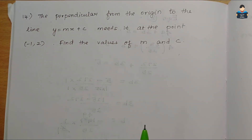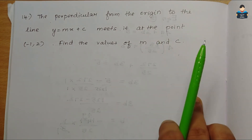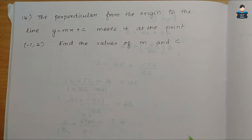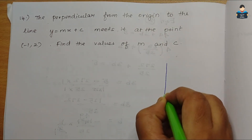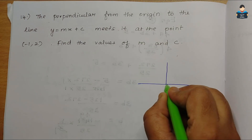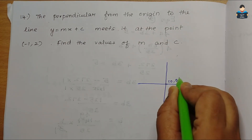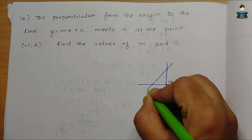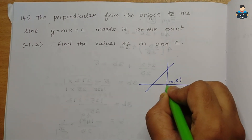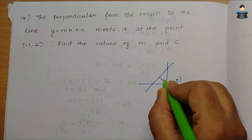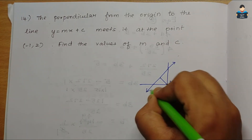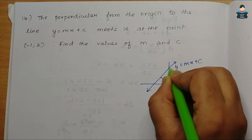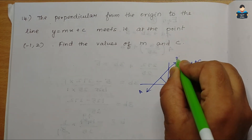So, a perpendicular line from the origin to the line y = mx + c. We have the x-axis, y-axis, and origin at (0,0). From the origin, a perpendicular is drawn to the line AB, where the line AB is y = mx + c.